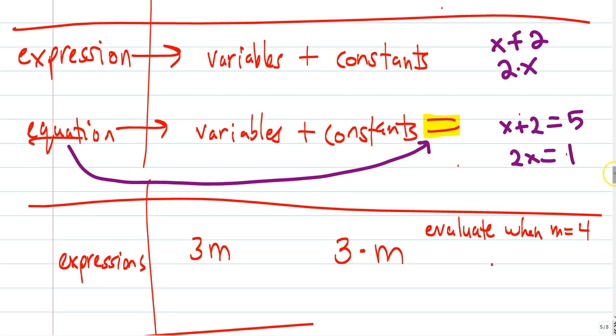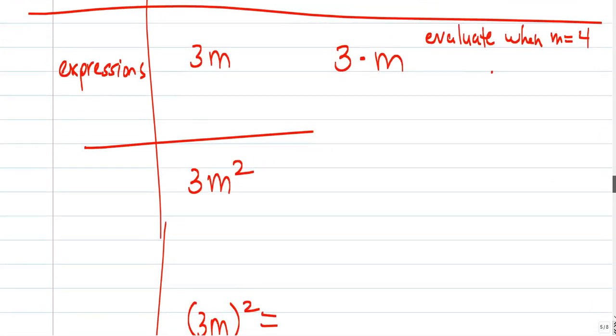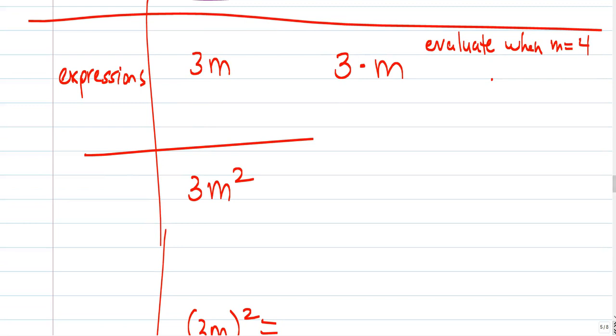Here are some examples of expressions. 3M. 3M is an expression. It has a constant of 3 and a variable of M. And a mathematical operation. 3M means 3 times M.